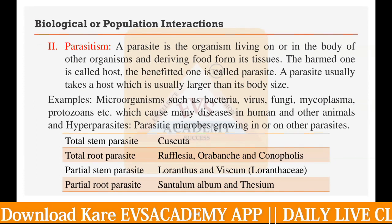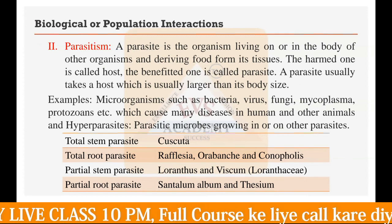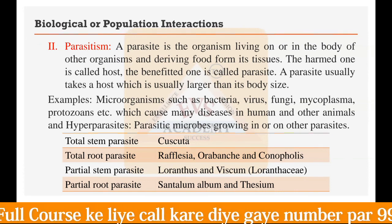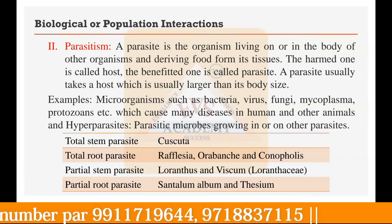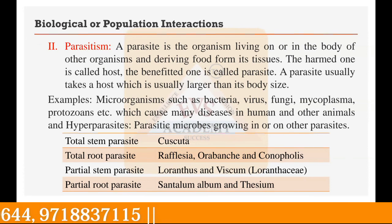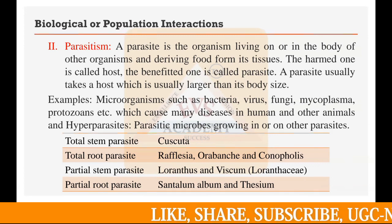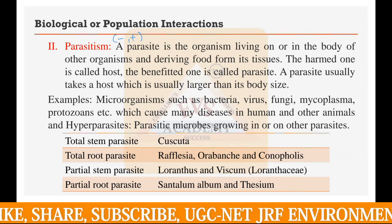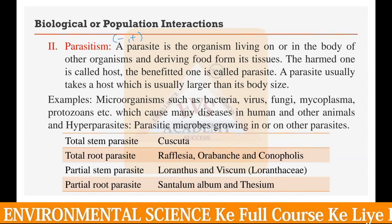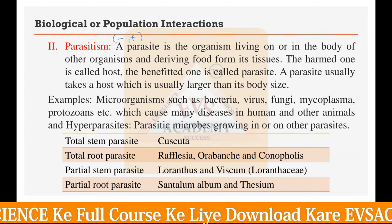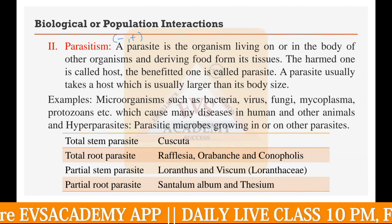The next negative interaction is parasitism. A parasite is an organism living on or in the body of another organism and deriving food from its tissue. The harmed one is called the host and the benefited one is the parasite. A parasite usually takes a host larger than its own body. Bacteria, viruses, and other microorganisms present in living organisms are all parasites taking nutrients from the host for their survival.